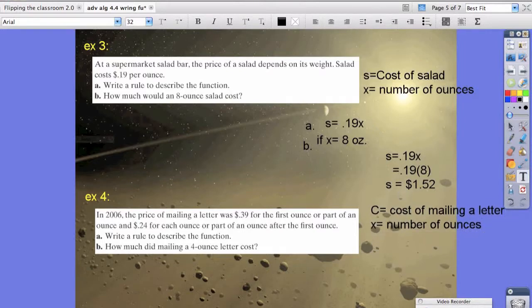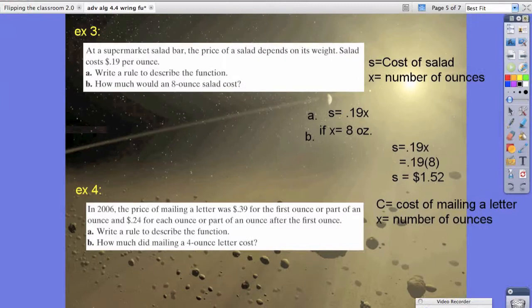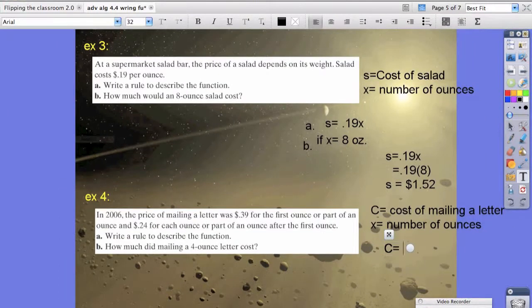Now the problem here is that it mentions that the first letter, or the first ounce will cost 39 cents. So what we want to do is start with C equals, well the first ounce is going to cost 39 cents. But we also have to add on to that 24 cents for every ounce thereafter.